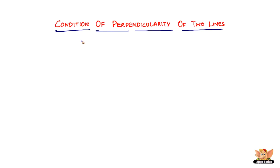In this video we're going to look into another condition relating to straight lines and slopes, and it is the condition of perpendicularity of two lines. What happens when two lines are perpendicular? What is the angle between them? How is it related to the slopes? That is what we're going to look into in this video.